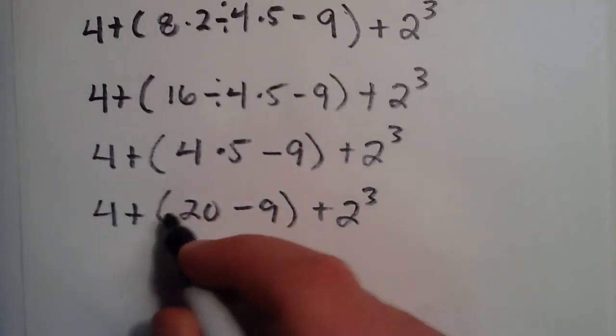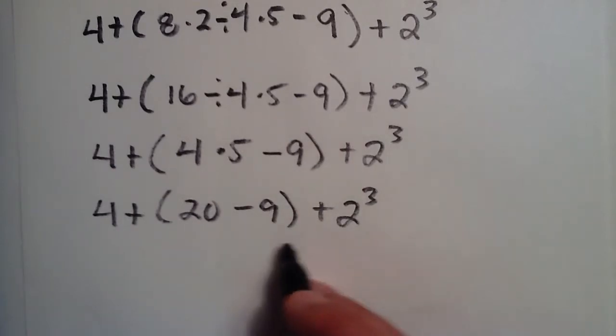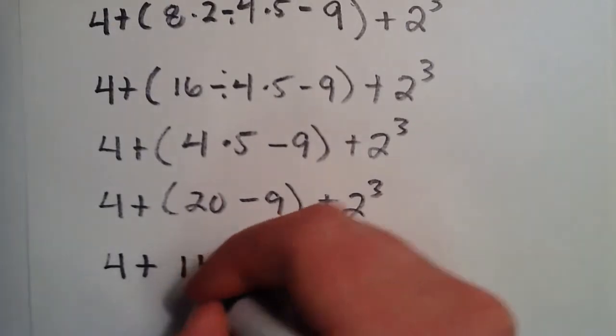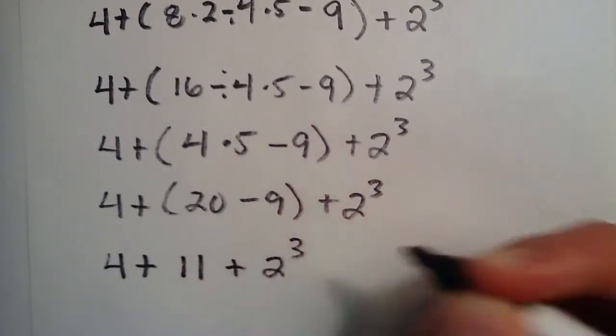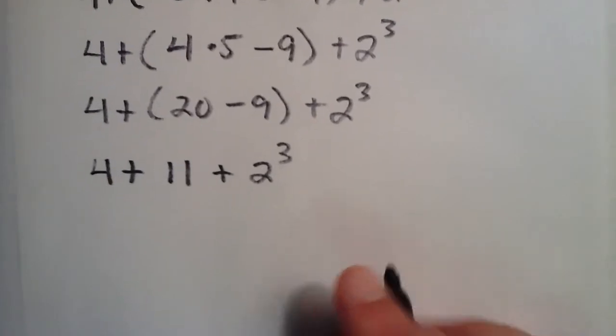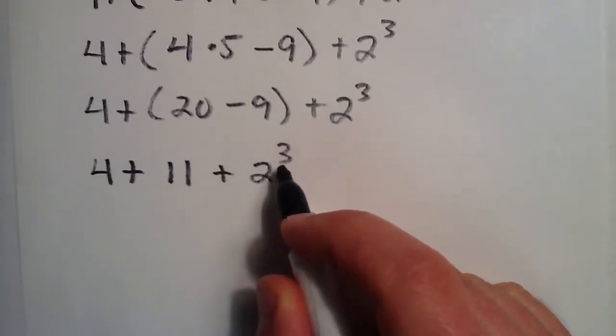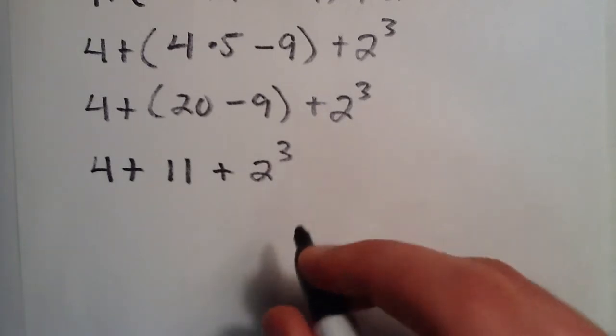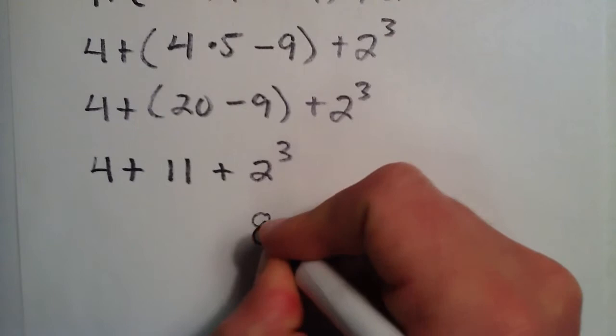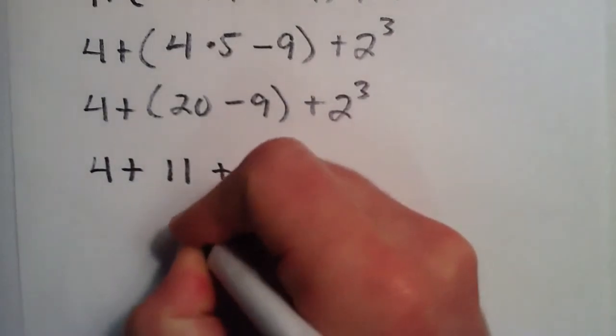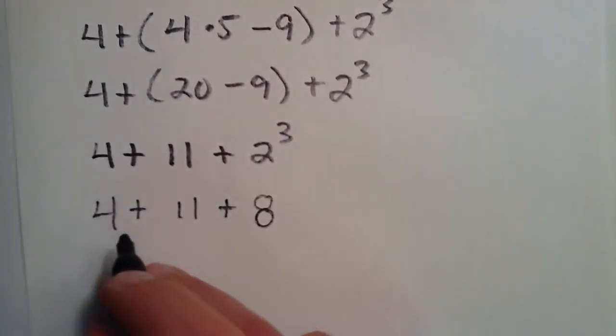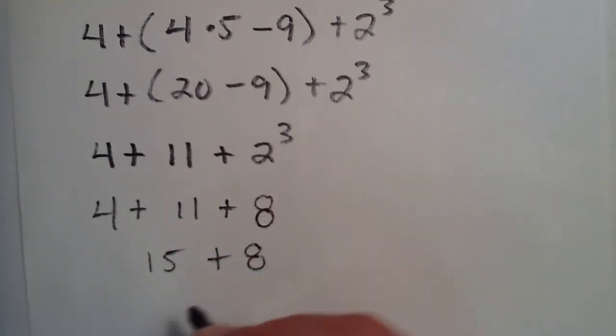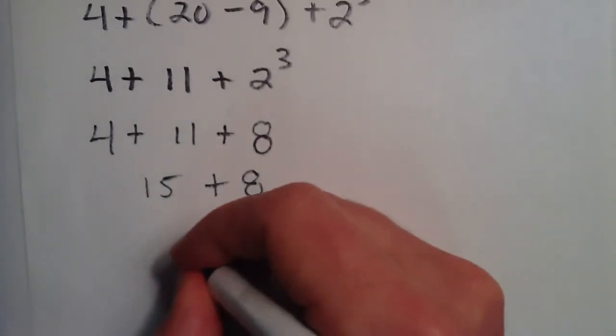So let's go ahead. We still have a grouping, so we have to take care of that before anything else. So 4 plus 20 minus 9, which is really just 11. And we add that to 2 to the third. Now 2 to the third is 2 multiplied by itself 3 times. So 2 times 2 is 4. And then 4 times another 2 is 8. So 2 to the third equals 8. And then we add 11, and we add 4. 4 plus 11 gives us 15. And then we add 8 to that. And 15 plus 8 gives us our answer 23.